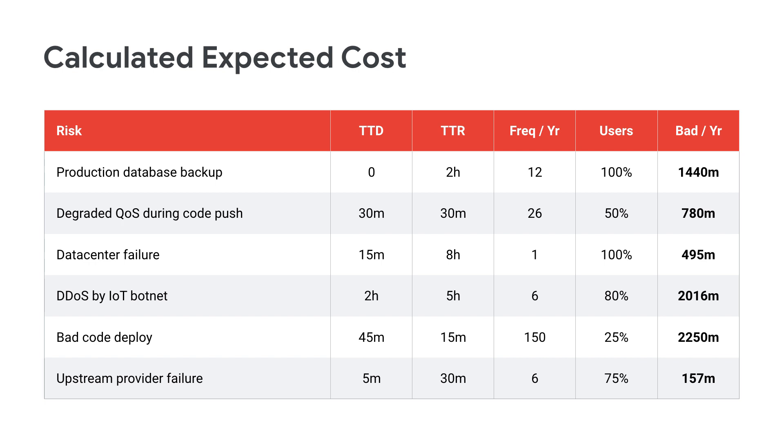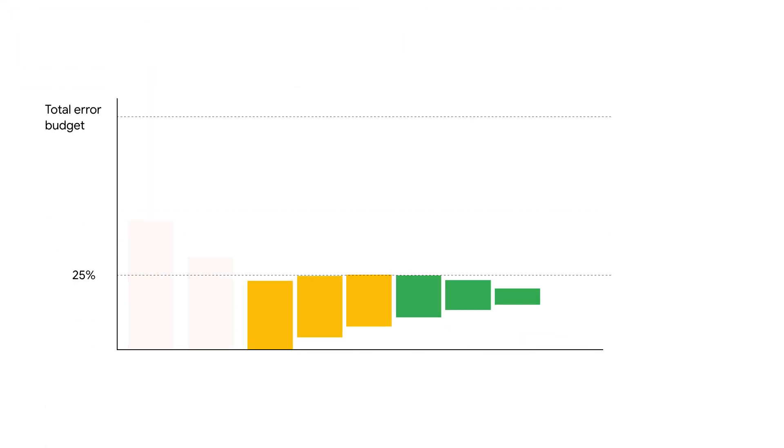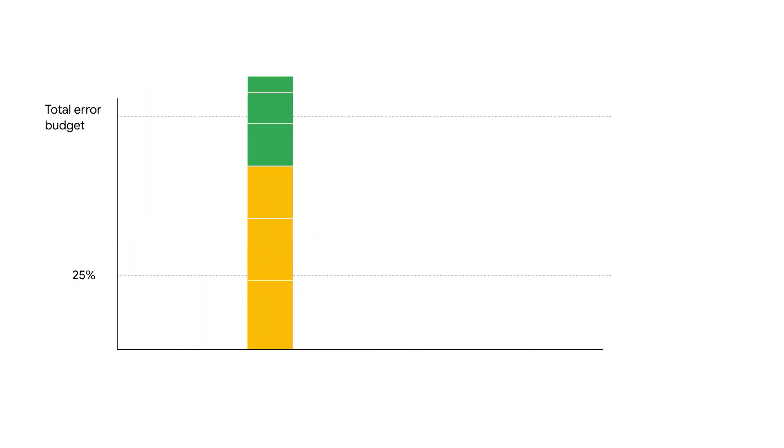Combined with these other small sources of outages, it's clear that you're going to exceed your error budget. Well, it's not all bad news. Since we've gathered our estimates and quantified this data, we can find out what things will bring us back under the error budget. Anything that consumes about 25% of the error budget or more is something that we want to address. And if I address all of the large risks and I still wind up exceeding my error budget, what do I do then?